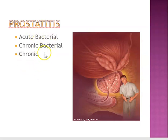There are three types we're going to talk about. Acute bacterial prostatitis is caused by an ascending infection from the urethra or reflux of infected urine into the ducts of the prostate gland. This is typically E. coli, but it can also be Pseudomonas, Klebsiella, or Chlamydia.